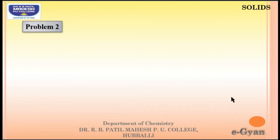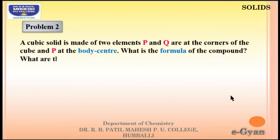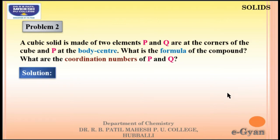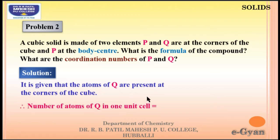Second numerical: a cubic solid is made up of two elements P and Q. Atoms of Q are at the corners of the cube and P is at the body center. What is the formula of the compound? Atoms of Q are at the corners, so the number of Q atoms per unit cell = 8 × (1/8) = 1.